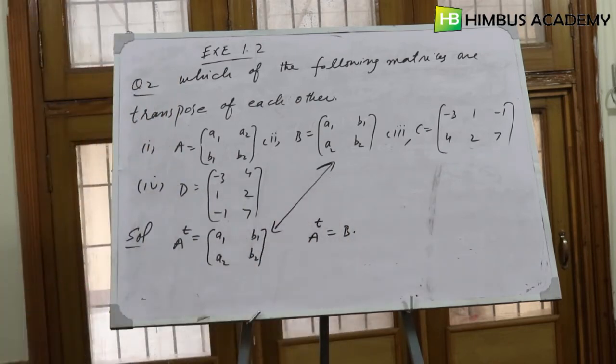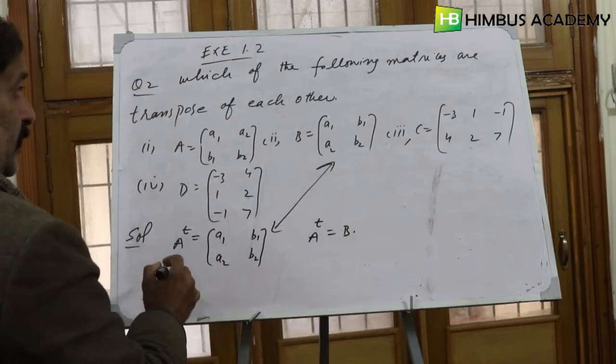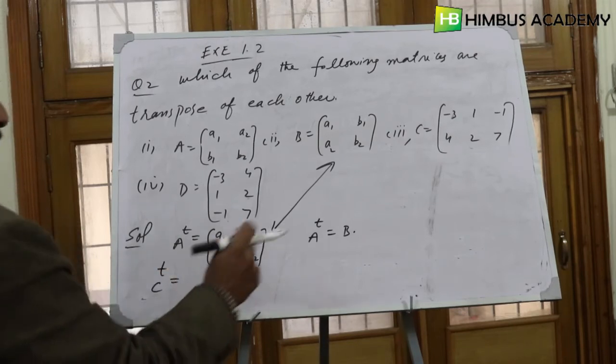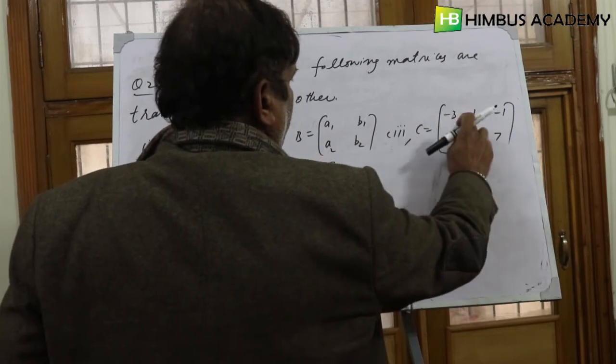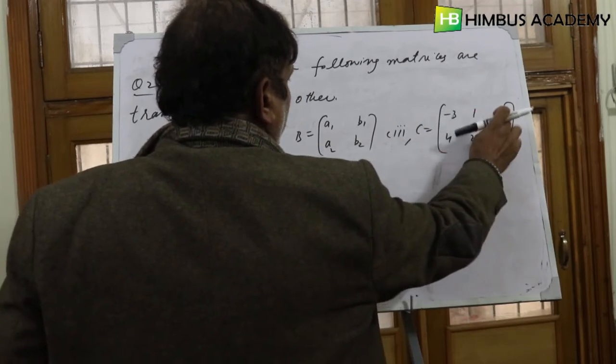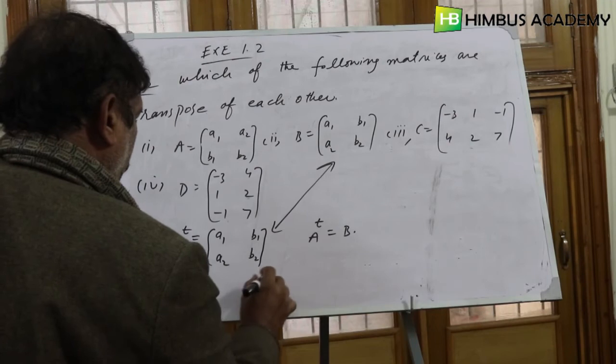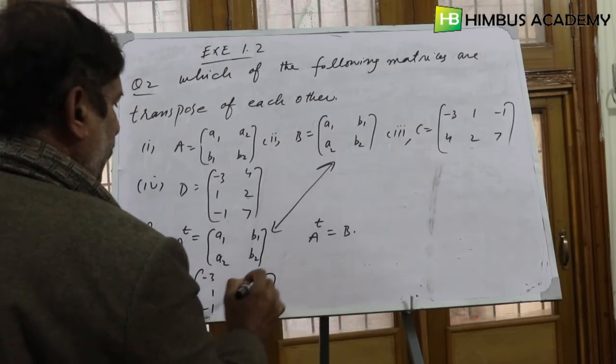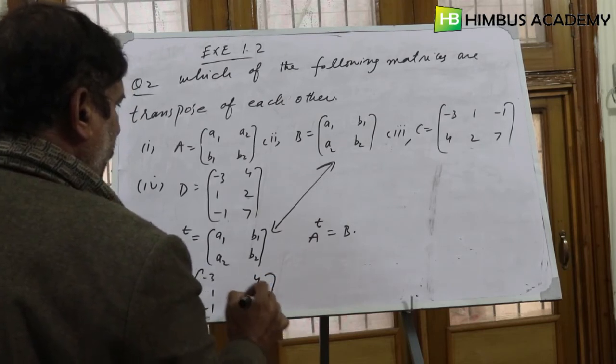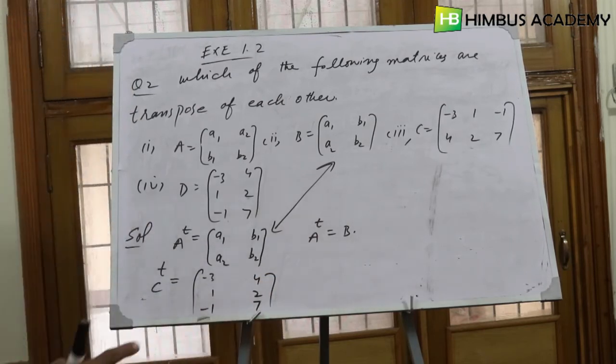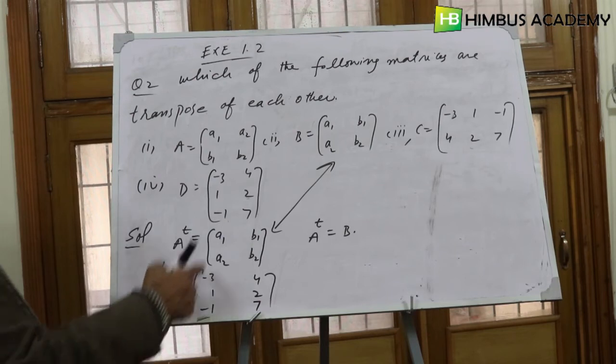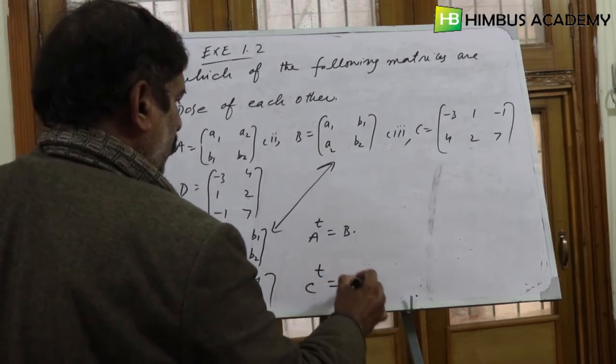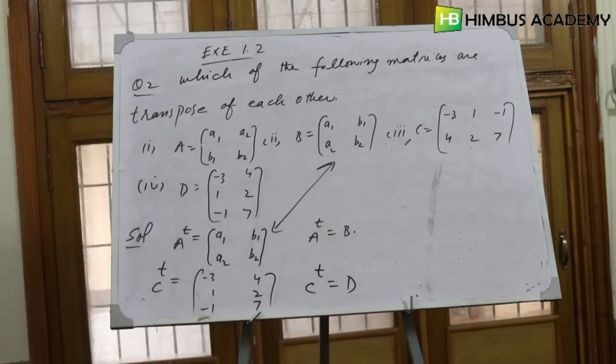Now you can take C transpose. Number three, C. C transpose: first row should be first column: minus 3, 1, minus 1. So minus 3, 1, minus 1 column-wise, and 4, 2, 7 column-wise. If we look at C transpose and D, C transpose is equal to D.